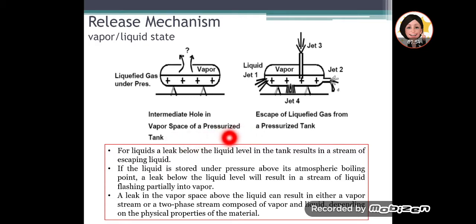For liquids that leak below liquid level in a tank, it results in a stream of escaping liquid. If the liquid is stored under pressure above atmospheric boiling point, the leak will result in a stream of liquid flashing partially into vapor. It will give out both liquid flowing out, pouring onto the floor, as well as vapor forming and affecting the surrounding area. A leak in the vapor space above the liquid can result in either a vapor stream or a two phase stream composed of vapor and liquid depending on the physical properties of the material. Both these materials can be released and give us both states of materials, liquid and vapor. We have to make a risk assessment for both these states.